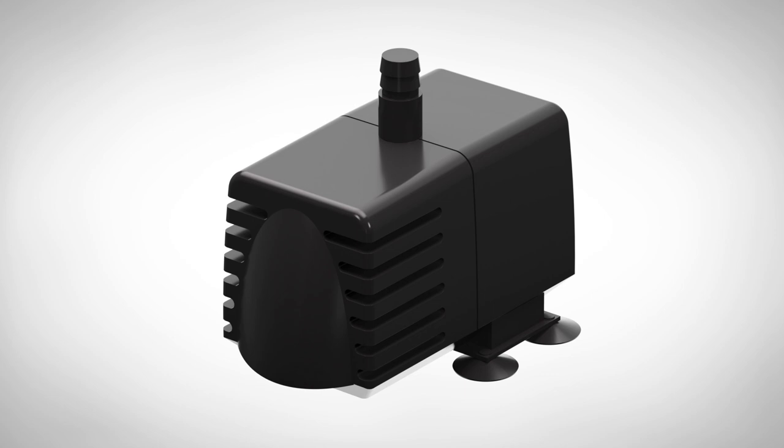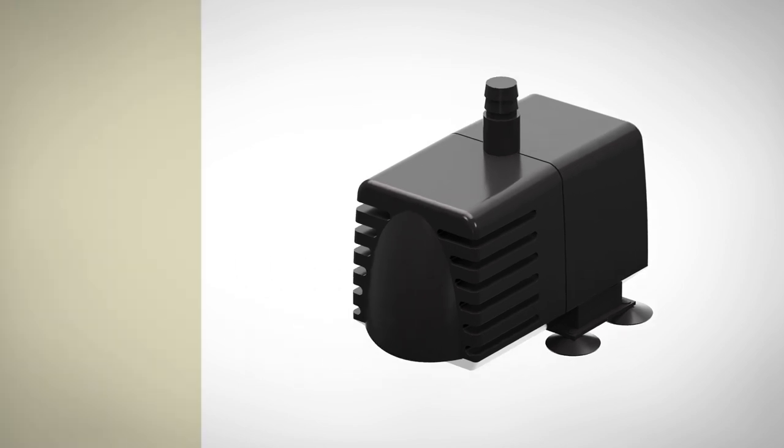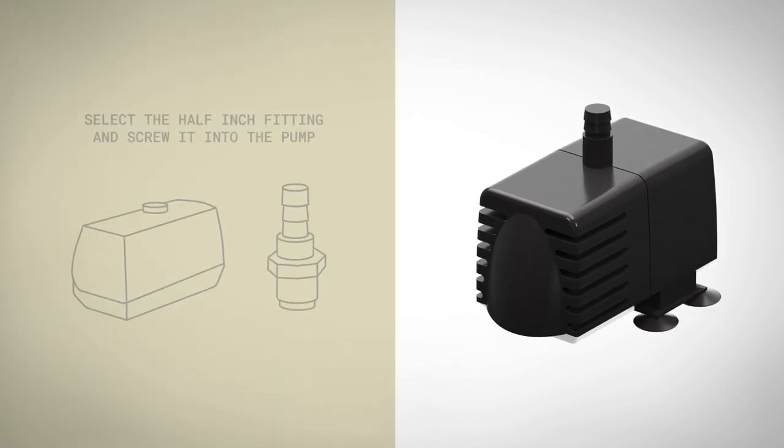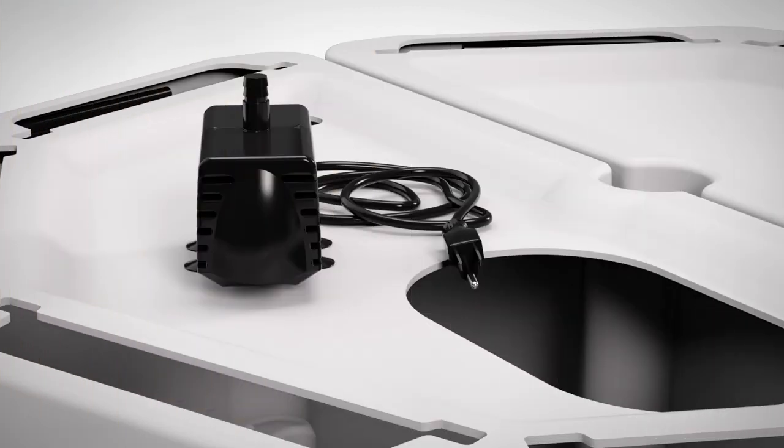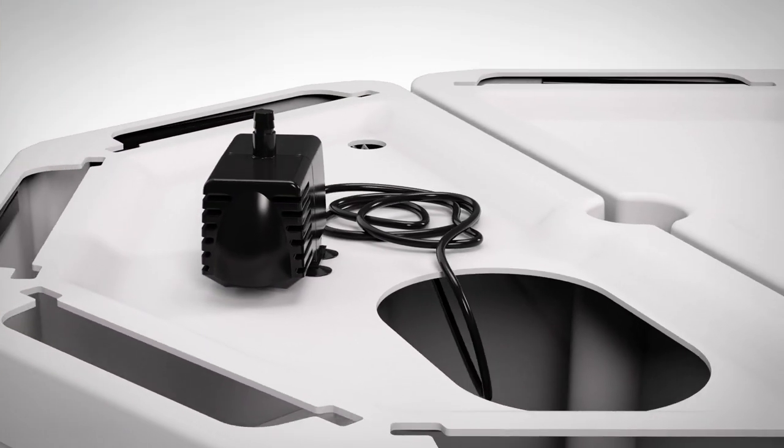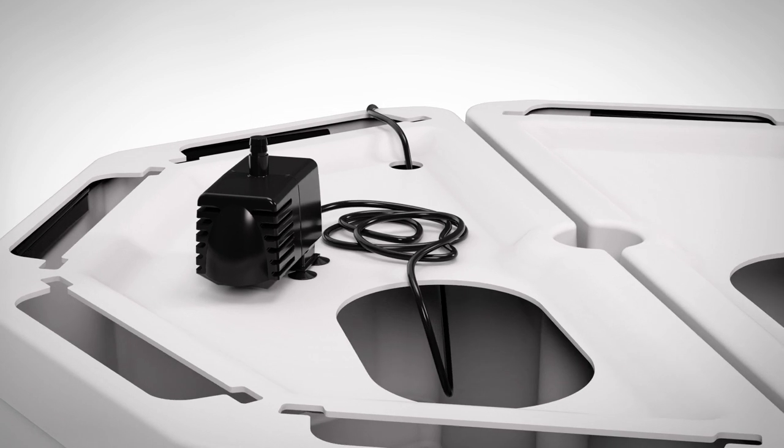Open the box containing the submersible pump. Select the half inch fitting and screw it into the pump. Set the pump on top of the left tank lid and thread the power cord down through the large oval opening and then back out of the tank through the small round opening in the lid.